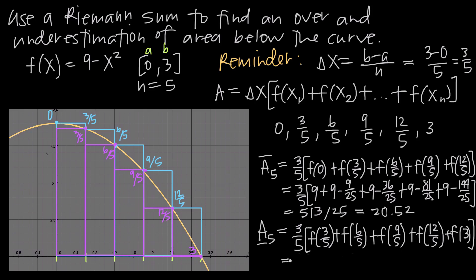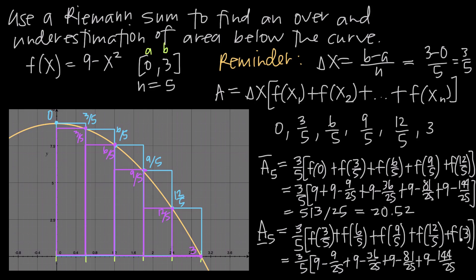For the underestimation, we have 3 fifths multiplied by: 9 minus 9 over 25, plus 9 minus 36 over 25, plus 9 minus 81 over 25, plus 9 minus 144 over 25, plus f of 3. Since f of 3 equals 9 minus 9, which is 0, we add plus 0. Doing the math gives us 378 over 25, which equals 15.12. That's our underestimation of area.